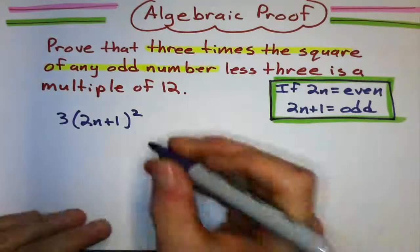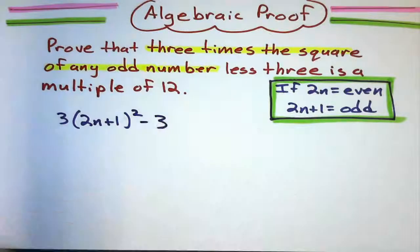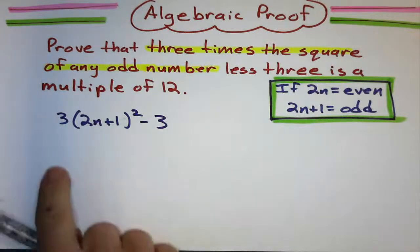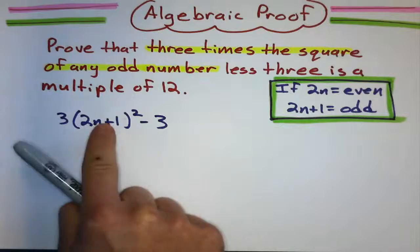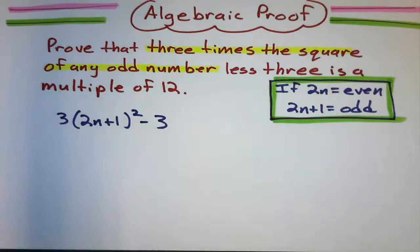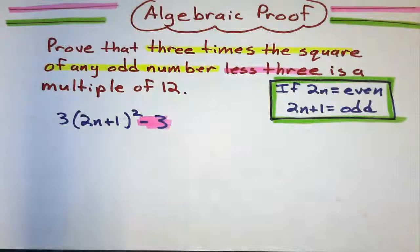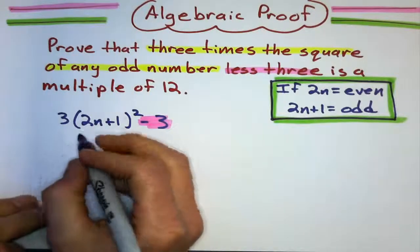Okay, less 3 just means it's going to be minus 3. So minus 3. So, 3 times the square of any odd number, minus 3. Let's simplify this and see what it gives me. We'll simplify this and we'll see what we get.